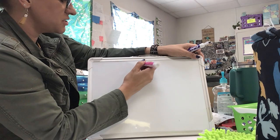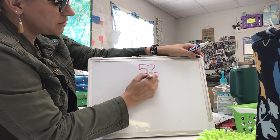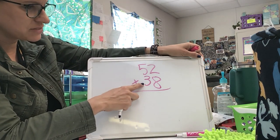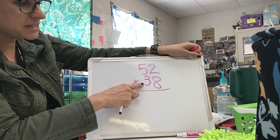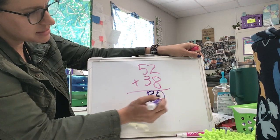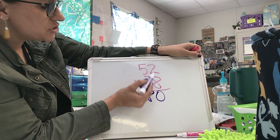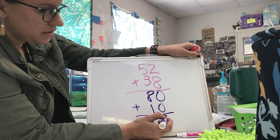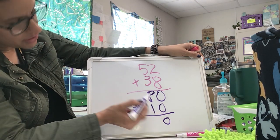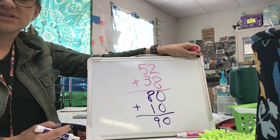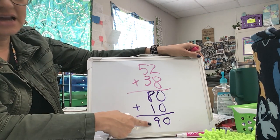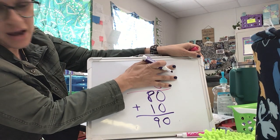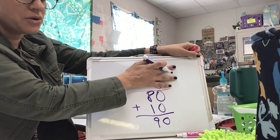Let's do fifty-two plus thirty-eight. Again, with partial sums, I am adding my tens place first. Five plus three tens is eight in my tens — remember, it's eight with a zero, so eighty. Two plus eight equals ten. So I'm going to add eighty plus ten. Zero plus zero is zero, and eight plus one is nine. So the sum of fifty-two plus thirty-eight is ninety. I used the partial sums — when I'm doing that second part of the equation, I'm creating an easier equation to solve.